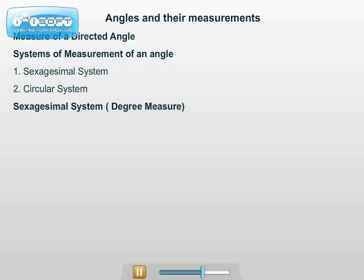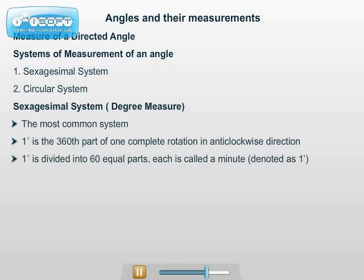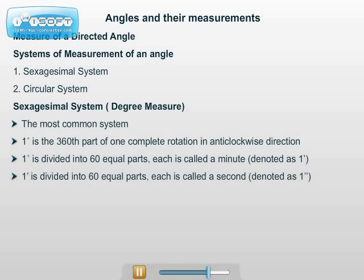Sexagesimal system (Degree measure): The most common unit of measurement of angles is a degree, which is the 360th part of one complete rotation in the anticlockwise direction. One degree is divided into 60 equal parts, each called a minute. One minute is divided into 60 equal parts, each called a second.